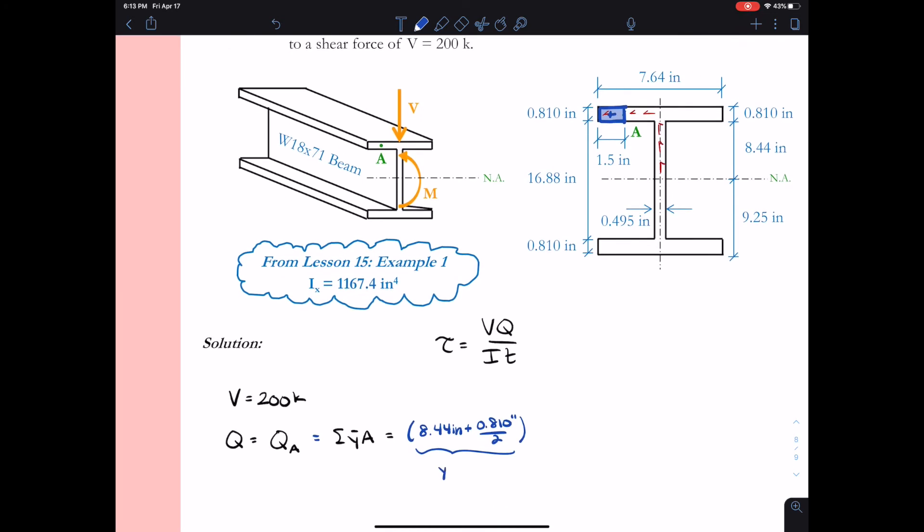Now I have to find y-bar to the center of gravity of that segment. That can be expressed by 8.44 inches plus half the thickness of the flange, so 8.44 inches plus 0.810 inches divided by 2. The area of the shaded portion in blue is 0.81 inches times 1.5 inches - that's the area of this segment. Then we can get the value for Q. Q calculates to be 10.7467 inches cubed.